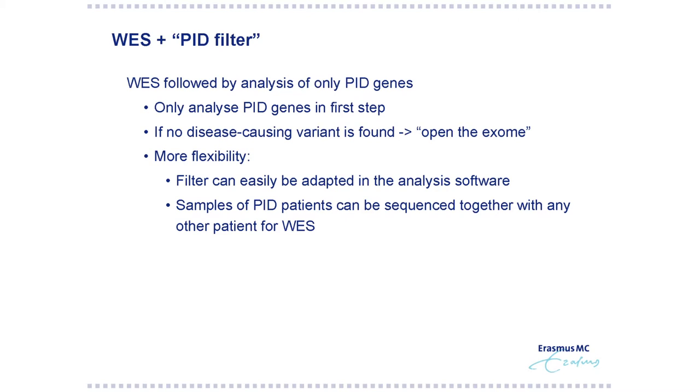An option done in several laboratories is to use whole exome sequencing in combination with a PID filter. That means you perform whole exome sequencing but only look at the PID genes. The other information is available, but you can decide not to look at it. If you do not find the disease-causing variant, you can then decide, together with the clinical geneticist, to open the full exome and look at all the variants.